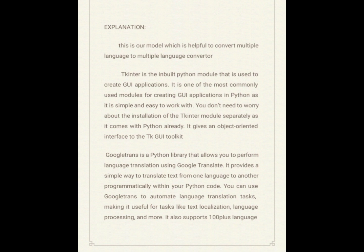Prototyping a GUI: Tkinter can be used to quickly prototype a GUI, allowing you to test and iterate on different design ideas before committing to a final implementation. Google Trans is a Python library that allows you to perform language translation using Google Translate. It provides a simple way to translate text from one language to another programmatically within your Python code. You can use Google Translate to automate language translation tasks, making it useful for tasks like text localization, language processing, and more. It also supports 100 plus languages.